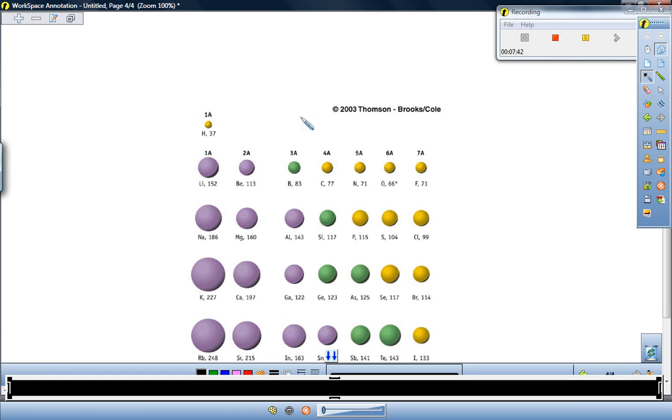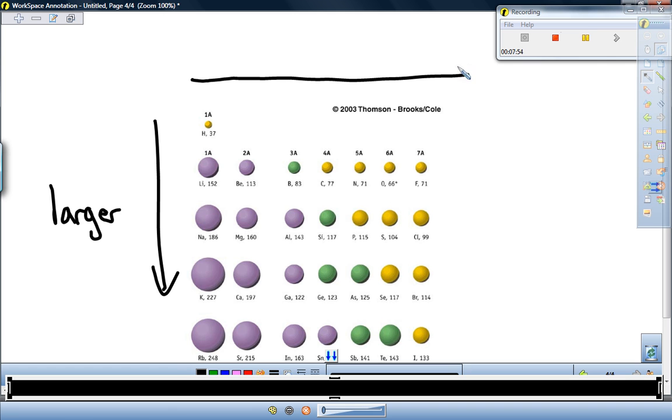So if we look at our pattern for atomic size, atomic radius, what we see is that as we go down a family, as we go down a group, atoms will get larger. And as we go across the periodic table, across the period, left to right, the atoms will get smaller because the effective nuclear charge increases and pulls in those outer electrons with better success.